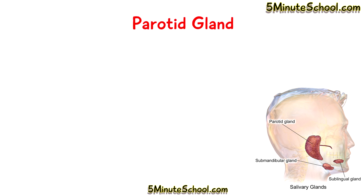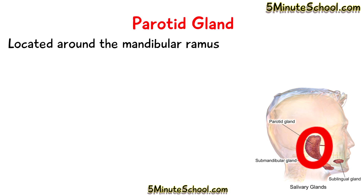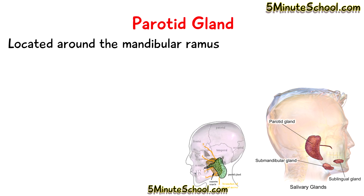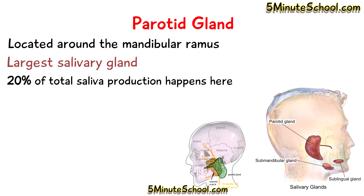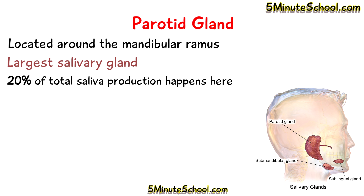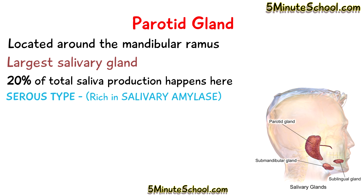The parotid gland is located around the mandibular ramus. It's the largest of the major salivary glands and produces around 20% of the total saliva production. It's classified as the serous type of salivary gland, so the main protein it produces is amylase.